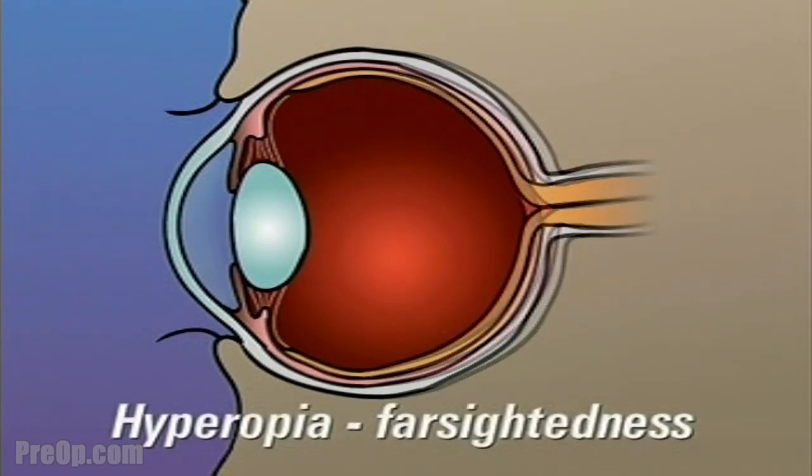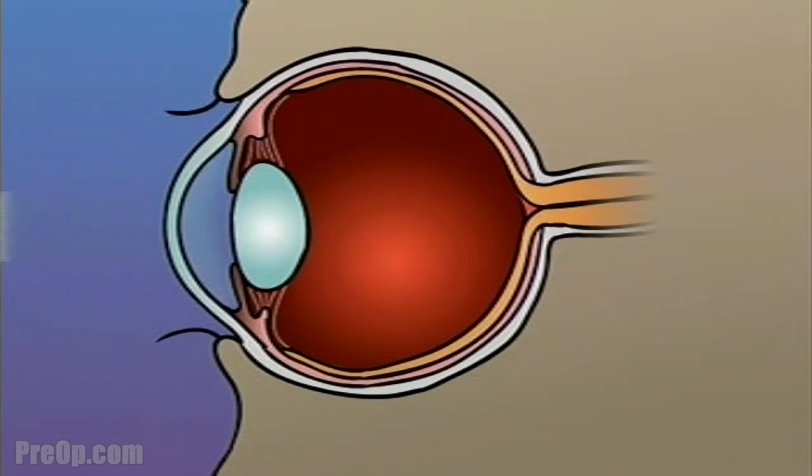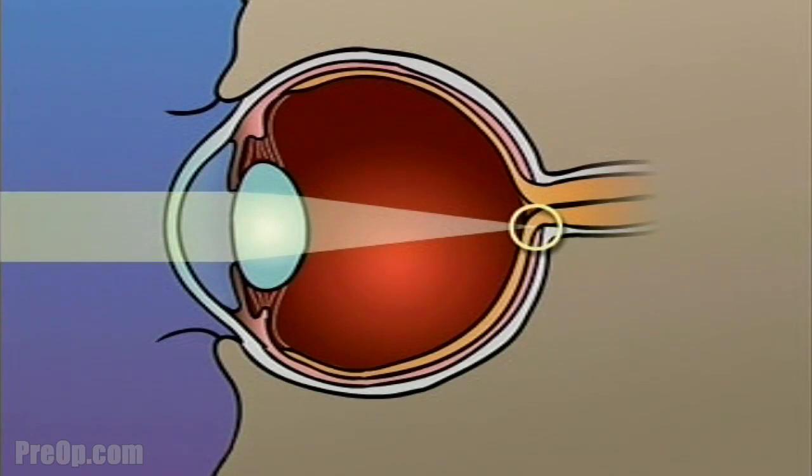Hyperopia, or farsightedness, occurs when the shape of the eye is too short. In this case, light rays are focused on a point behind the retina.